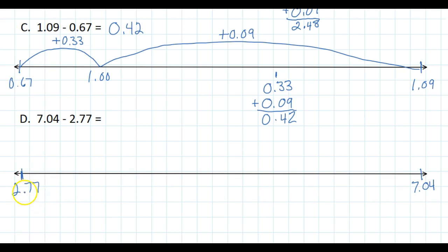Again, I'm thinking of this as 277 and I want to go to 300. So that means I add 23, or in this case I add 0.23, which takes me to 3.00.